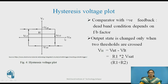On the x-axis there is Vin and on the y-axis V0. As Vin increases in the positive direction, the output will initially be at +Vsat, but once it crosses the VUT condition, it will drastically change state from +Vsat to −Vsat.